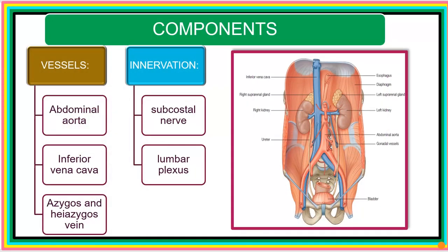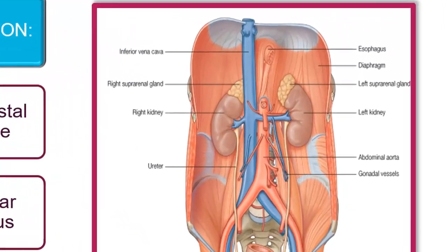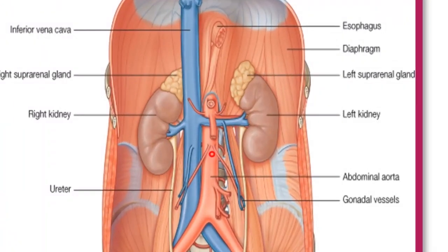We'll be seeing a number of vessels — basically some very large vessels. There is the abdominal aorta as it enters through its opening in the thoracic diaphragm. The next big vessel in this region is the inferior vena cava, and finally we'll see some other smaller vessels like the azygos vein and the hemi-azygos vein. We also have a number of nerves — the subcostal nerve and all the branches emanating from the lumbar plexus.